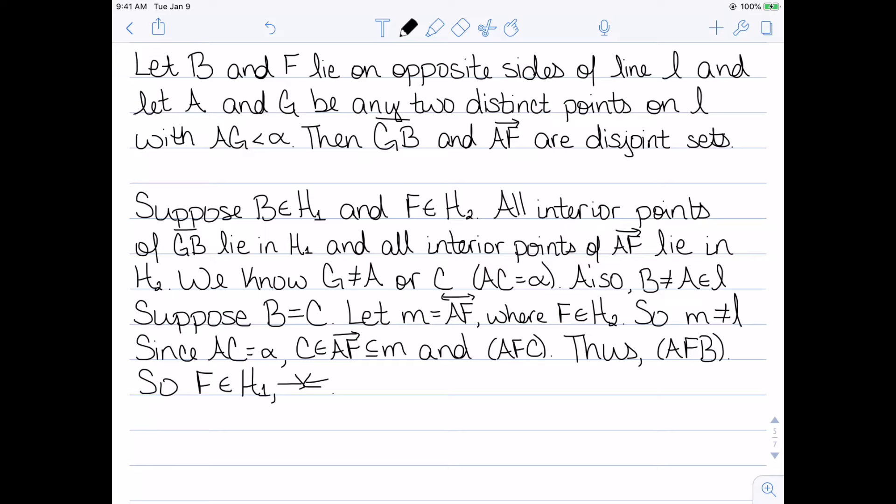Since A is on the line and B is in H1, every point between A and B must also lie in H1. So F must lie in H1, which is a contradiction, since we know that F lies in H2. So therefore, what we assumed is wrong. B is not equal to C. So therefore, we have our proof that the segment and the ray are disjoint. They do never meet.